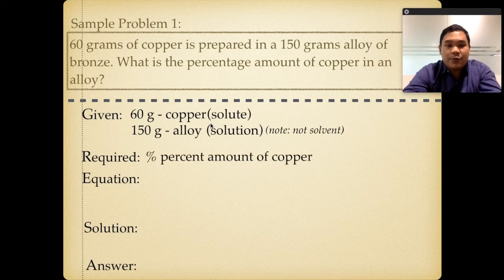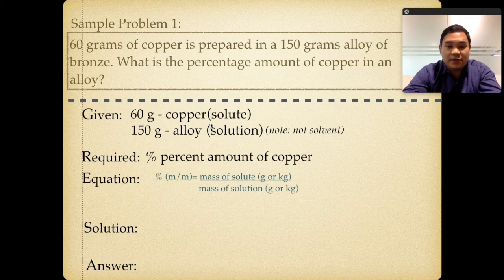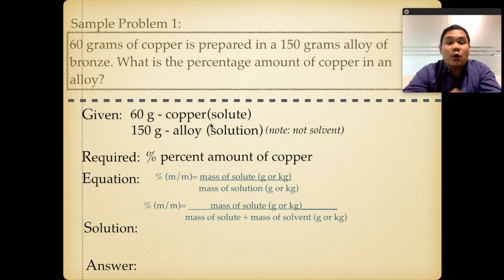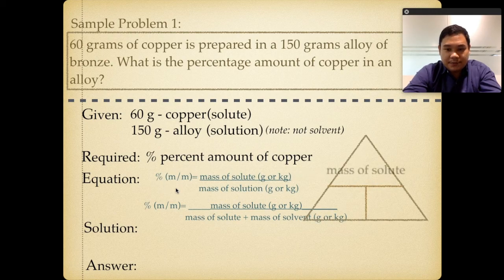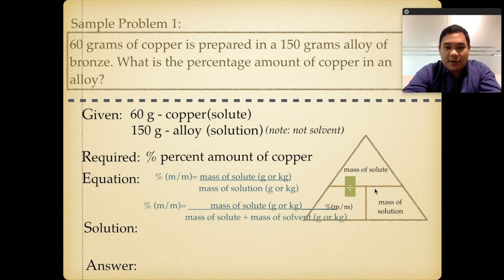What is required is the percent amount of copper. The equation is percent m/m equals mass of solute divided by mass of solution, times 100. We can also use the triangle method: mass of solute on top, percent m/m on one side, and mass of solution on the other. Since we are given the mass of the solution directly, we use equation number 1.